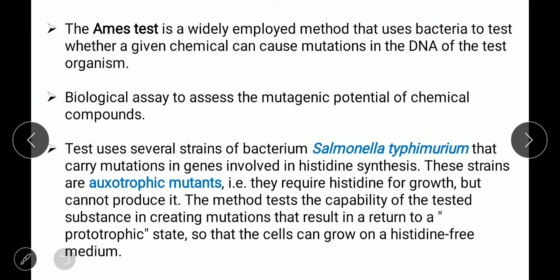In the Ames test, we do not use the normal wild-type Salmonella typhimurium. Instead, we use a mutant Salmonella typhimurium strain — a strain in which a particular gene has been mutated. The mutated gene is the one responsible for the synthesis of the histidine amino acid. In the Ames test, this mutant bacterial strain is used.